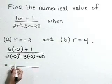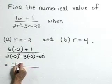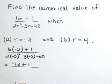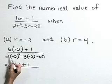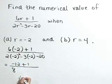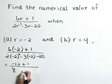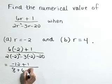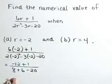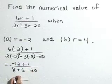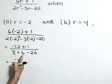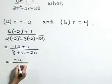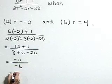Simplifying the numerator, we have negative 12 plus 1. In the denominator, negative 2 quantity squared is 4 times 2 is 8. Negative 3 times negative 2 is positive 6, minus 20. So the numerator is negative 11. In the denominator, 8 plus 6 is 14, minus 20 is negative 6.